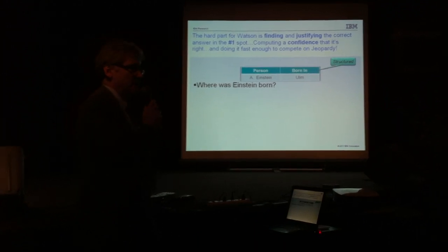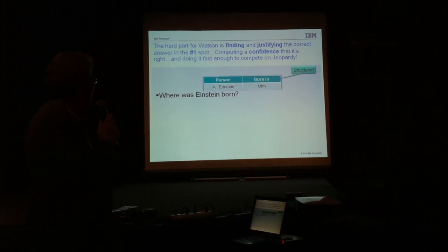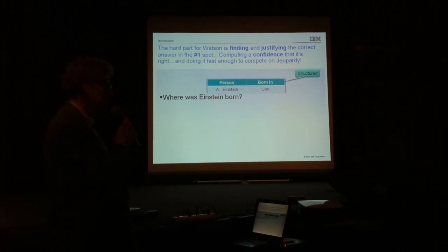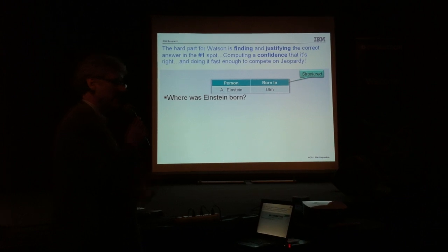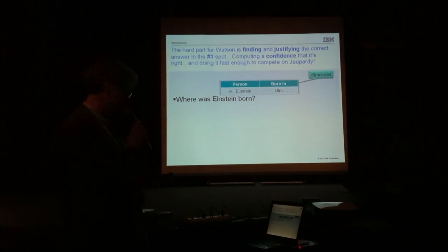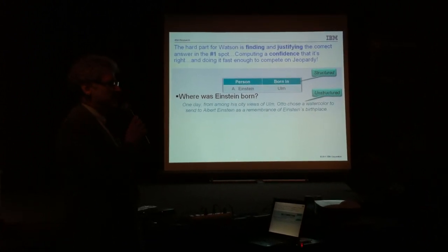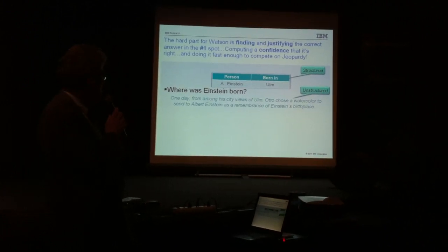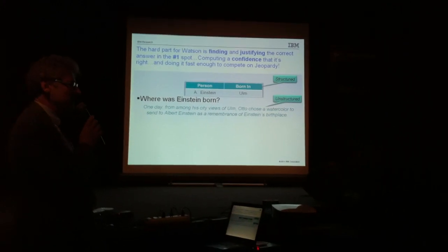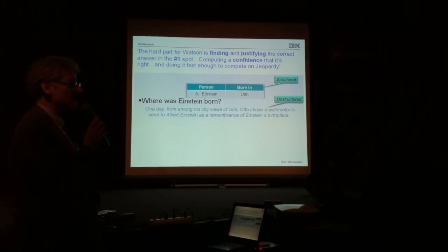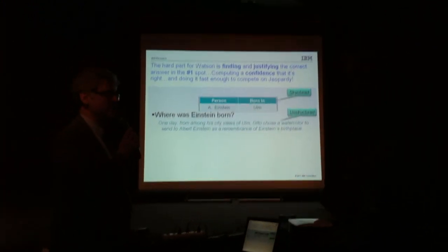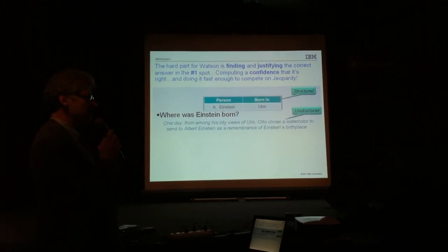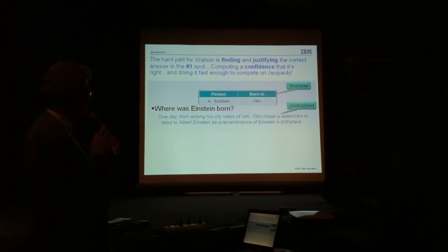Take a question like: Where was Einstein born? If you have a database where the person is Einstein and the location of birth is Ulm, it's very easy to imagine how a computer can answer that. But suppose you don't have a database, and instead find a passage like: 'From amongst his city views of Ulm, Otto chose a watercolor to present to Albert Einstein as a remembrance of Einstein's birthplace.' This illustrates how you really have to understand language to pull out the fact that Einstein was born in Ulm.